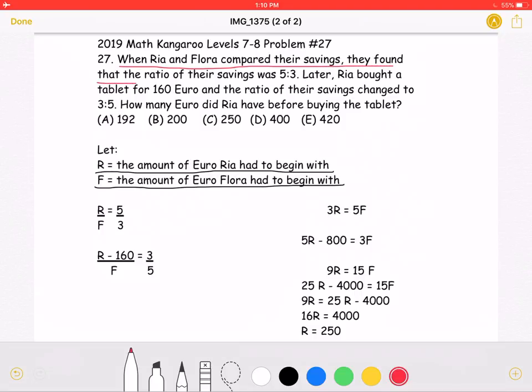when Rhea and Flora compared their savings, they found that the ratio of their savings was 5 to 3. This is equal to that statement: R over F, which is the ratio between the amount of savings of each, is equal to 5 over 3.